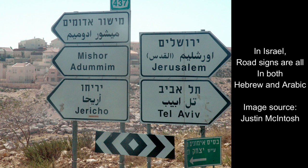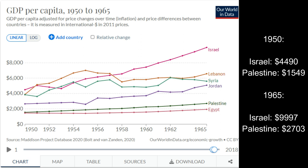Israel made both Hebrew and Arabic official languages — Arabic to placate the Arab population, and Hebrew as a common language to unite Jews arriving from all over the world. This was key to building a pluralistic nation-state from many different identities. Israel went through a decade of austerity from 1949 to 1959, but it ended up outperforming all its Arab neighbors, with Israel's GDP per capita continually rising while neighboring Arab states stayed at much lower levels.